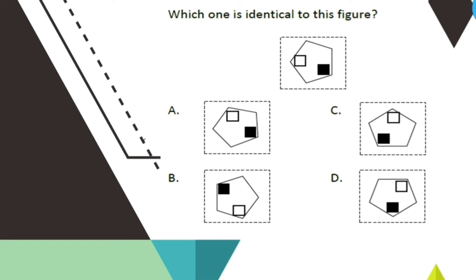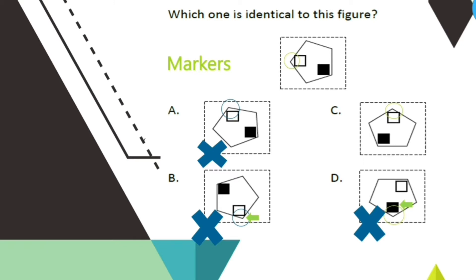Which one is identical to this figure? For these kinds of problems, you need to have markers. You can assign whatever marker you want, but my marker for this one is the triangle made by one side of the blank square and the angle of the pentagon. In letter A, our marker is not present, so it's automatically wrong. Letters B, C, and D have the triangle, but in letter B the triangle is a bit lopsided, while in letter D the triangle is made by the side of the shaded square. In times that many choices coincide with your marker, you have to observe the differences between the choices. The correct answer should be letter C.